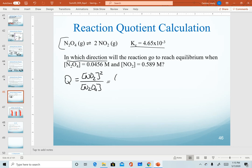Again, Q is going to have the same setup as K, products over reactants, coefficients are exponents. We plug in our values that are given.